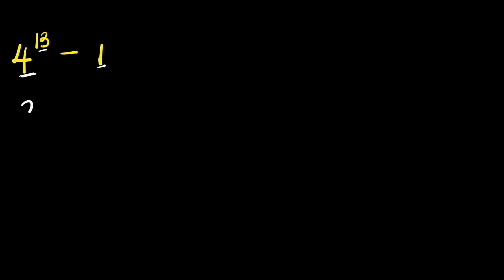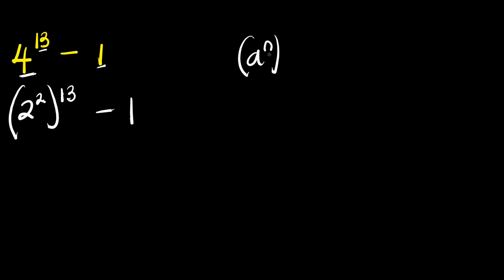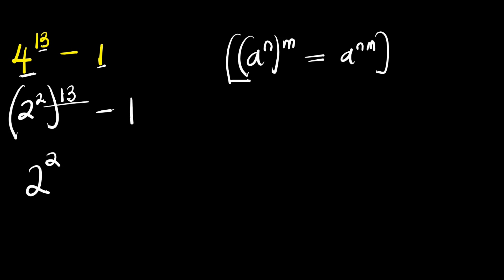4 is a perfect square, which is 2 to the power of 2. This is raised to the power of 13 minus 1. A power n raised to the power of m equals a power n times m. Multiplying this exponent, we have 2 to the power of 26 — that is 2 times 13 — minus 1.